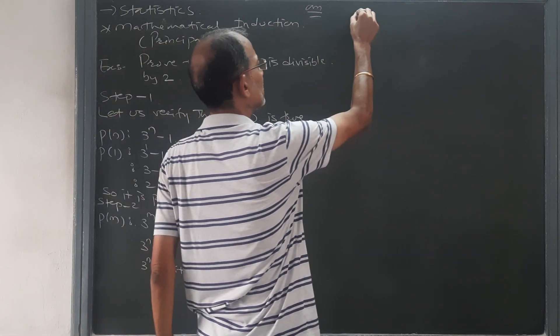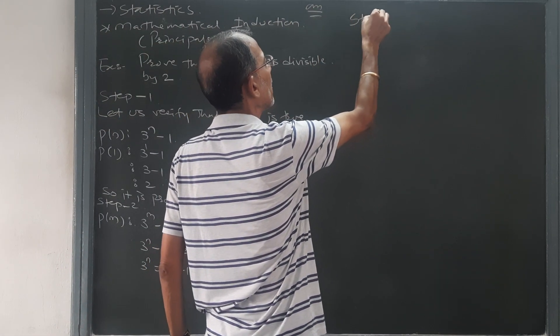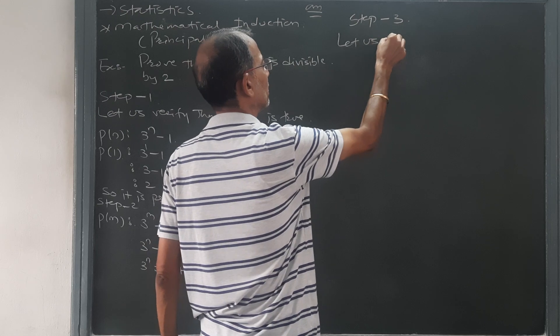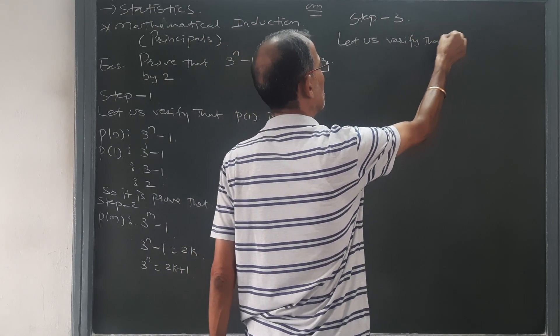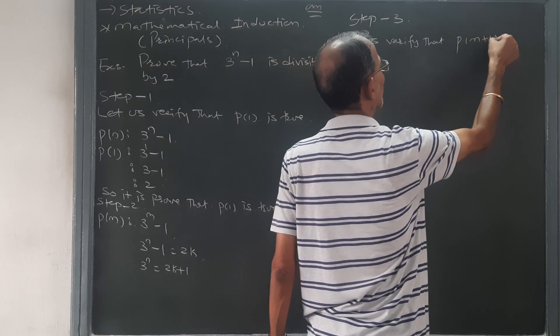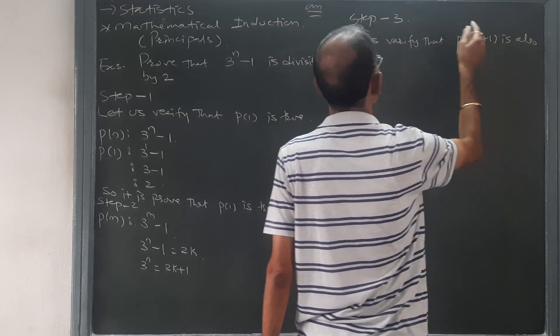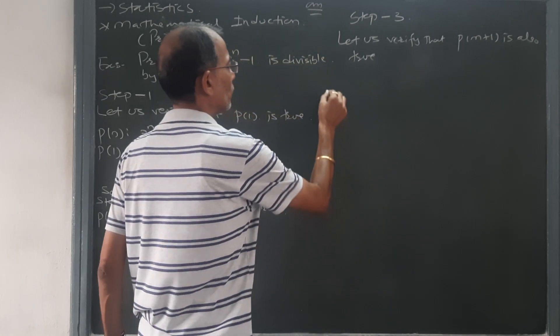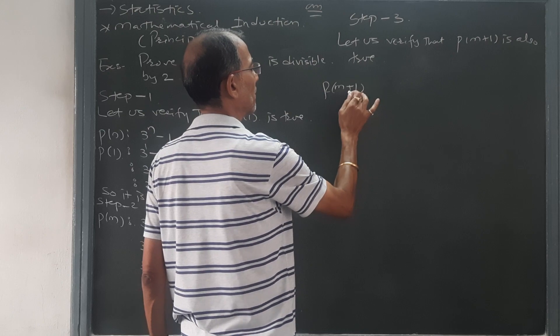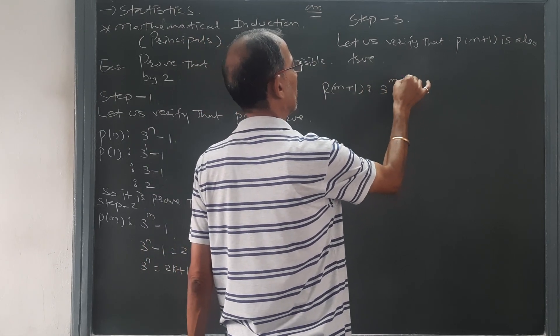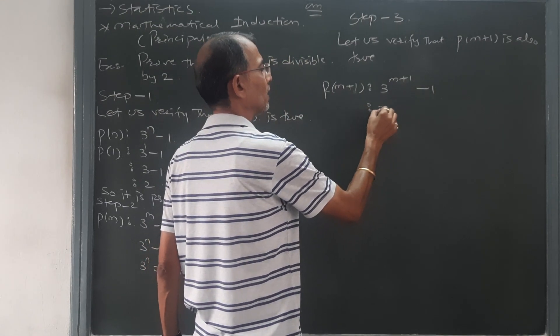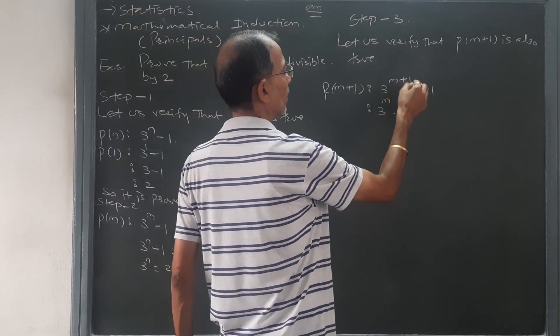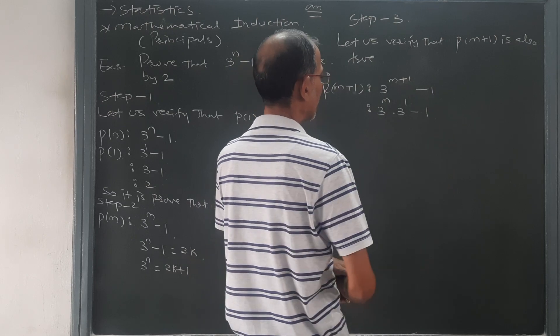Step number 3 says it is to be proved with m plus 1. Let us verify that P(m+1) is also true. P(m+1) is 3 raised to m plus 1 minus 1. We will simplify this: 3 raised to m power will be kept separate and 3 raised to 1 power will be kept separate.